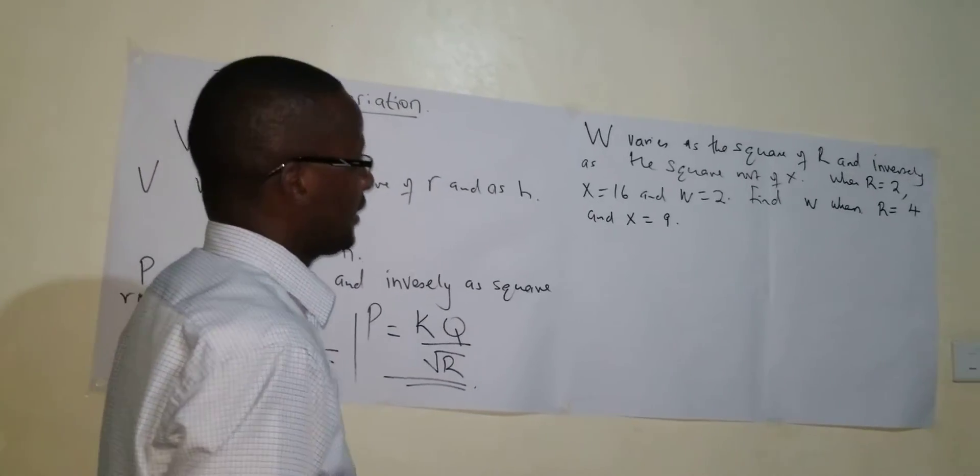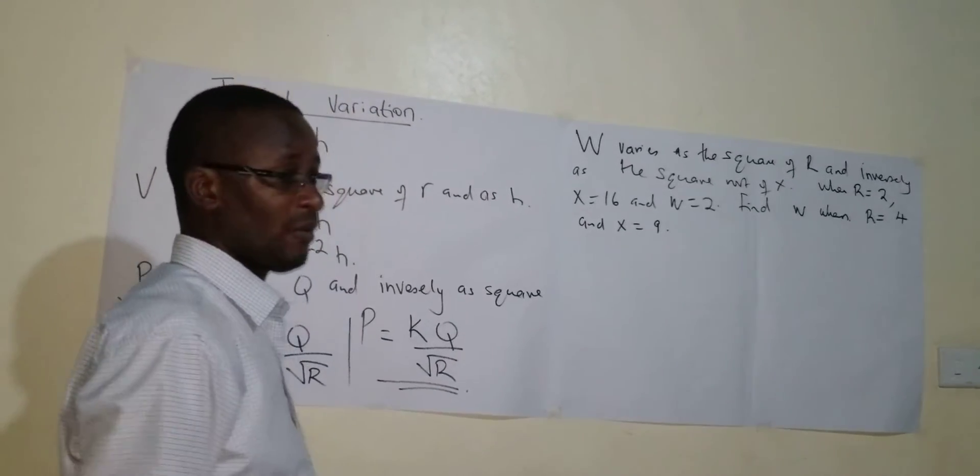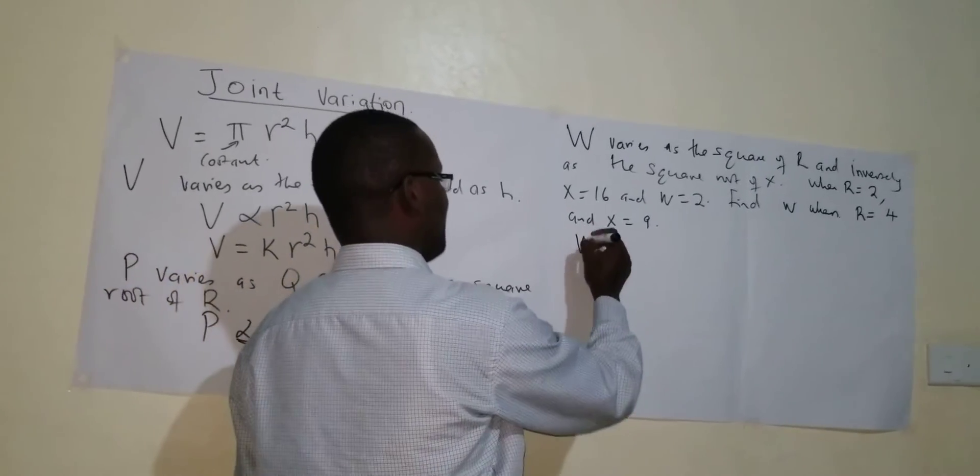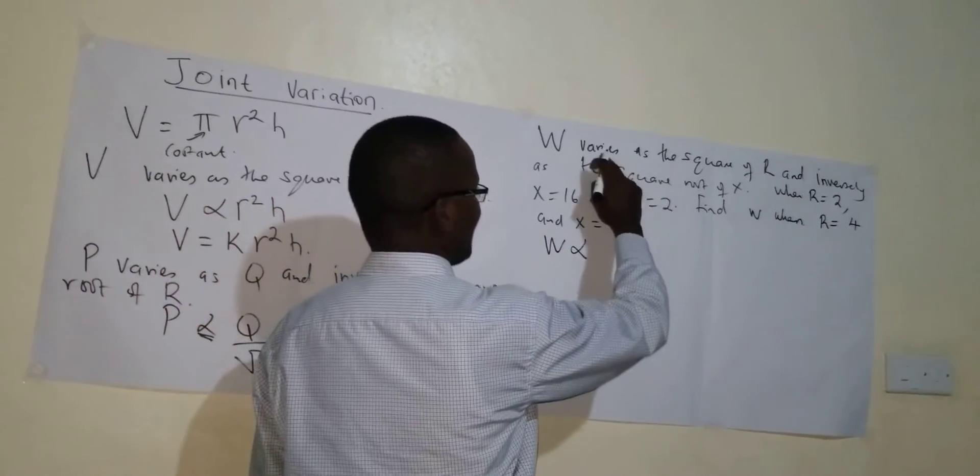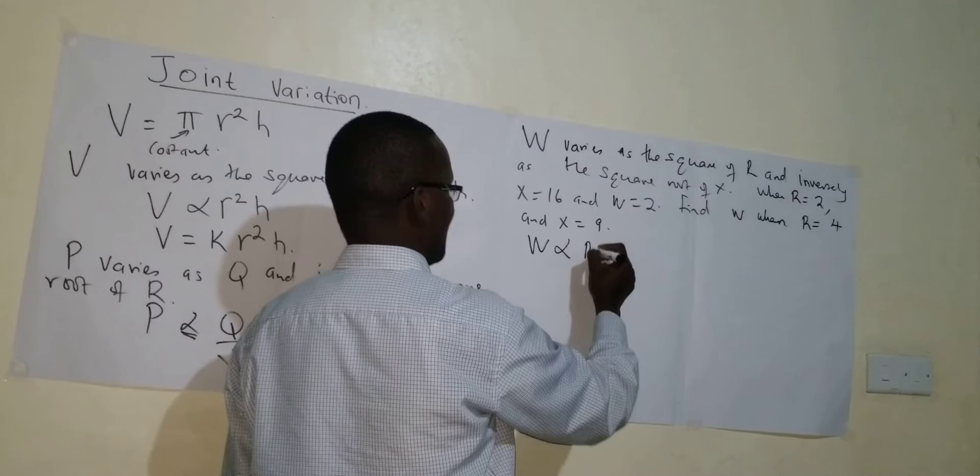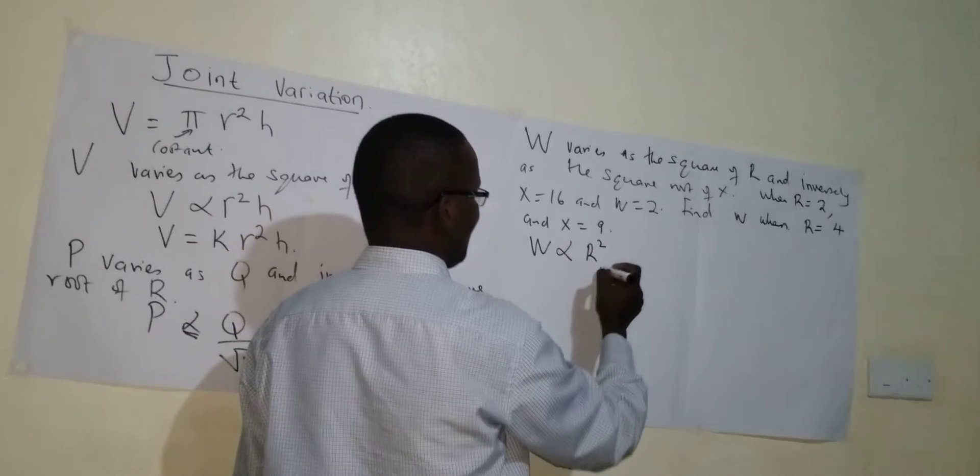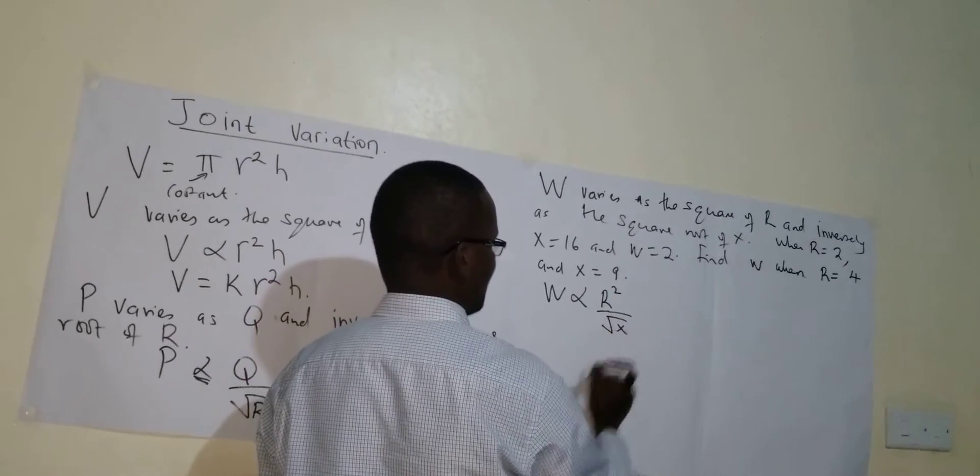So in this case, you must first of all form an equation. So W varies directly, first of all this one means direct, as the square of R and inversely as the square root of X.